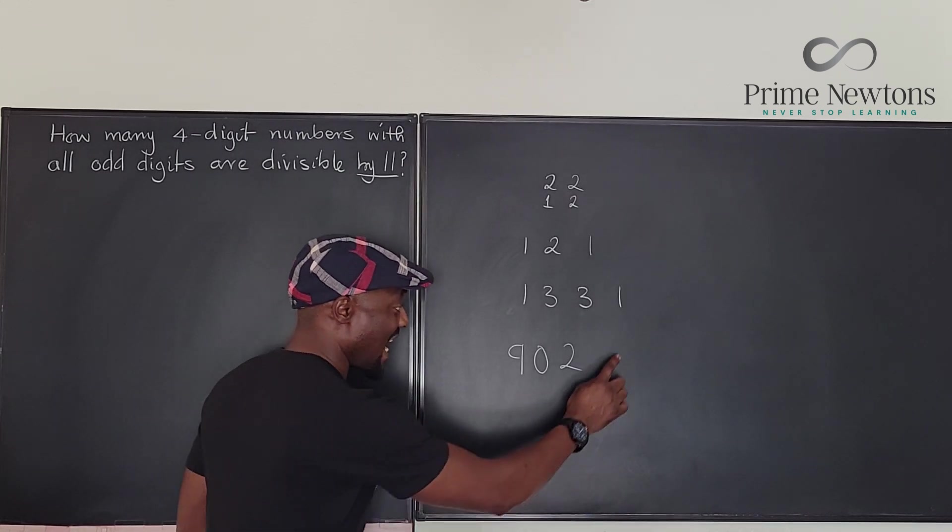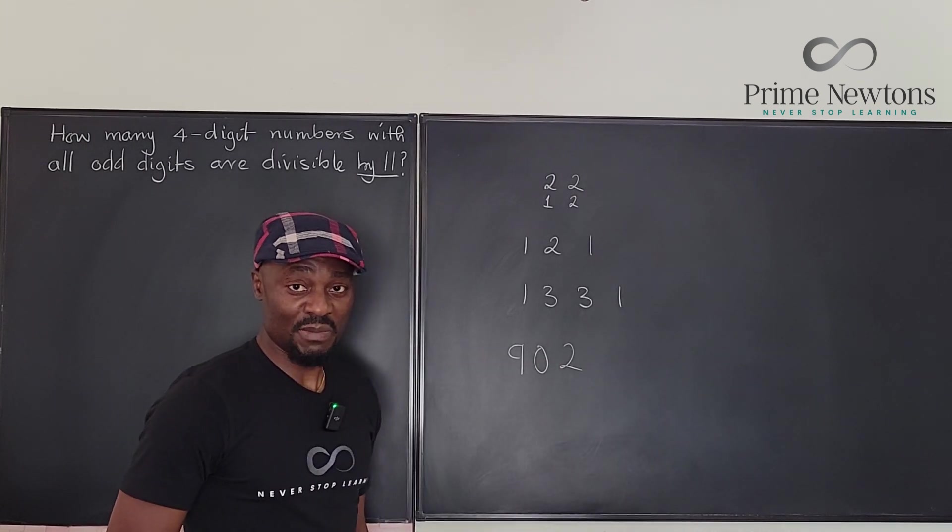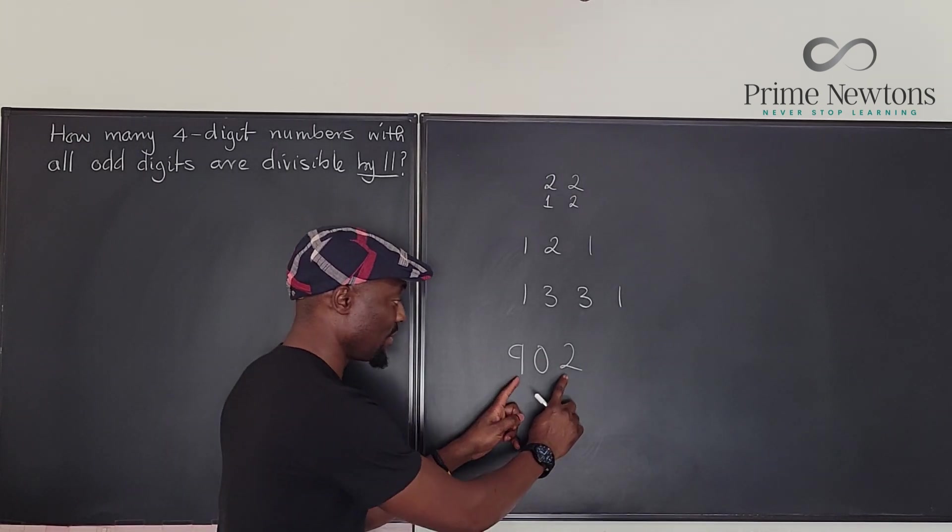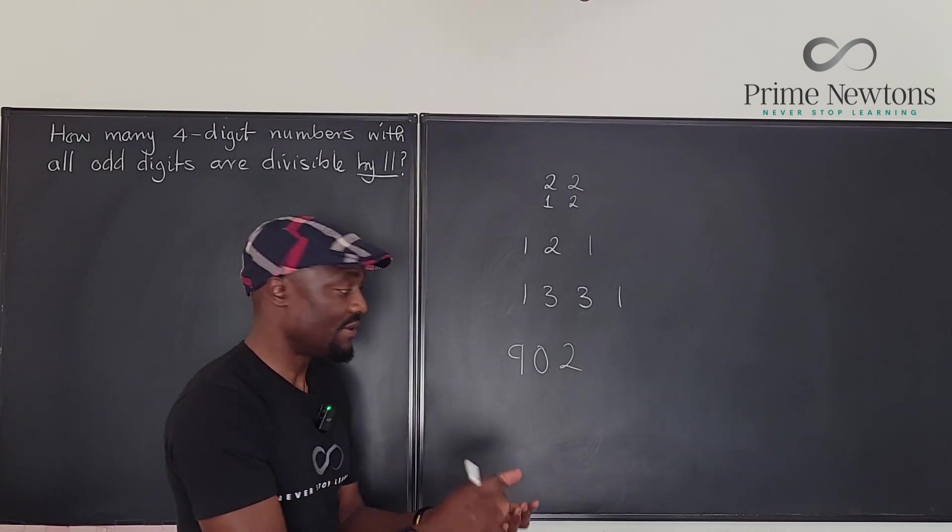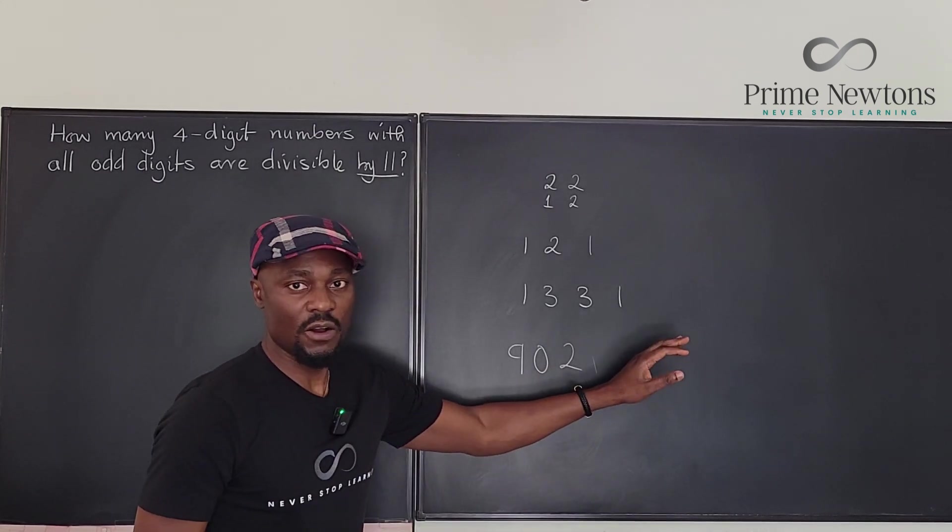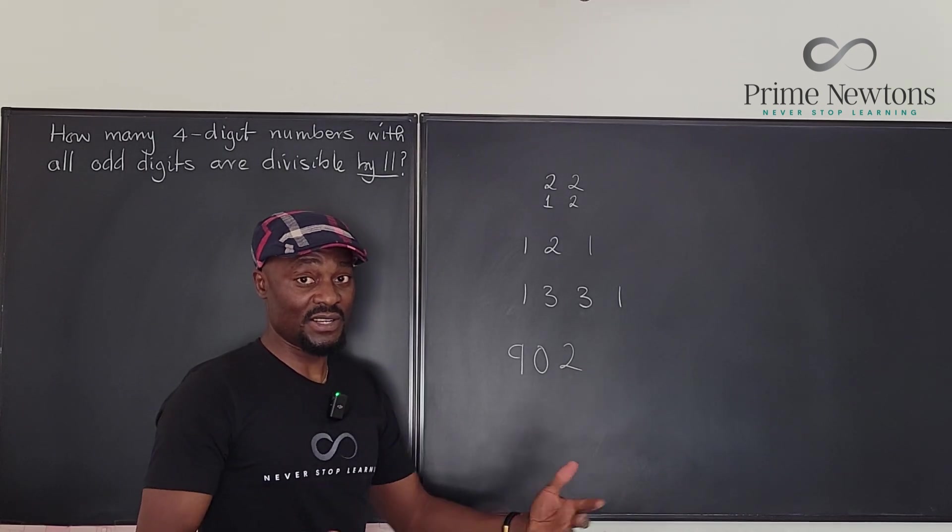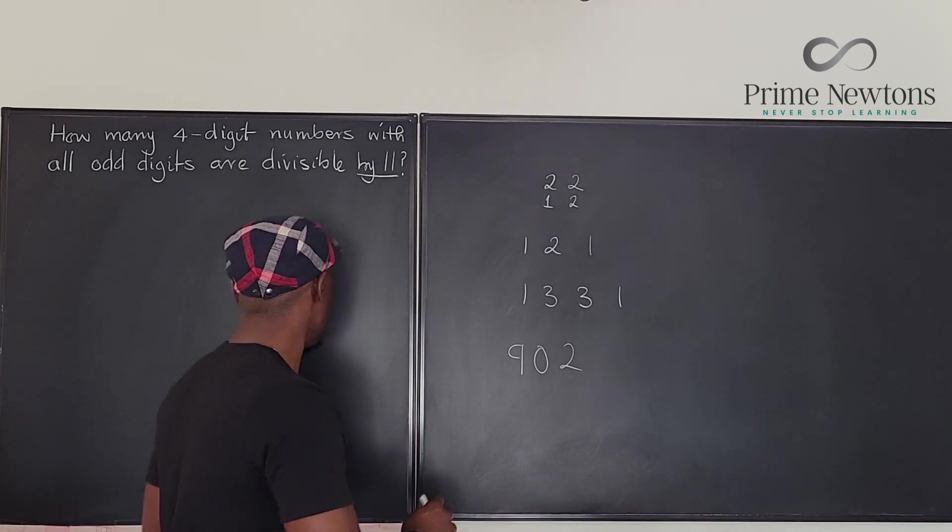Now if you add anything here, then this number will no longer be divisible by 11 because it's impossible to generate a difference of 11. Whether you put 1 or 2 or 3 or 4, you can't put 11 because 11 is not a digit.